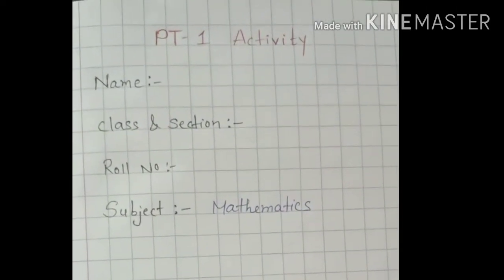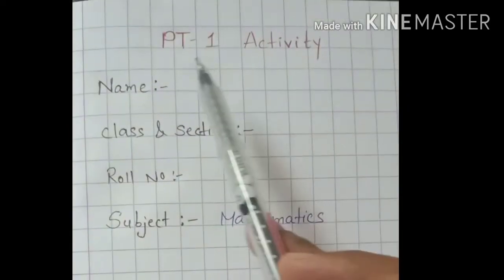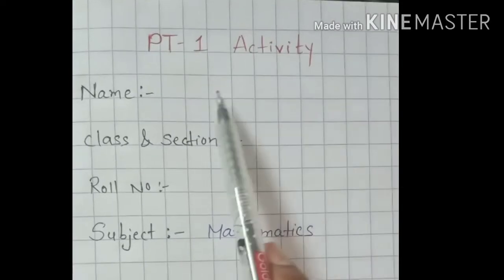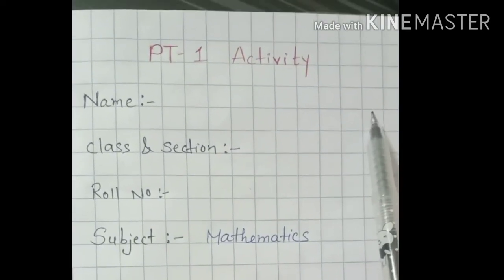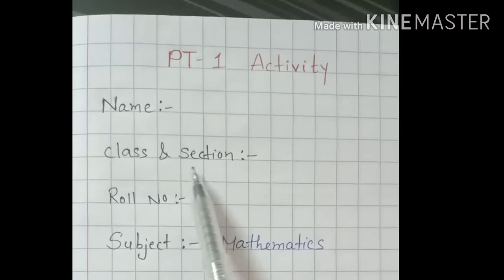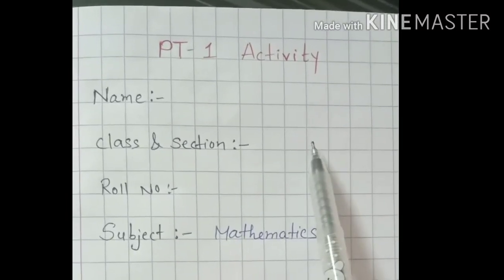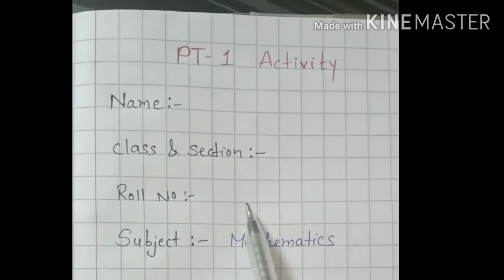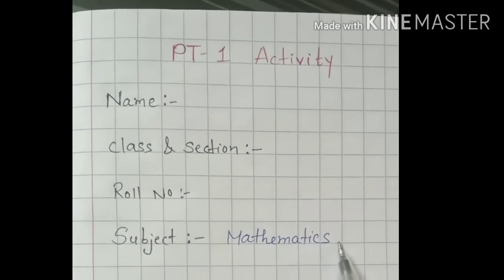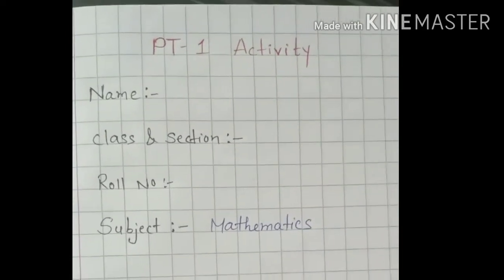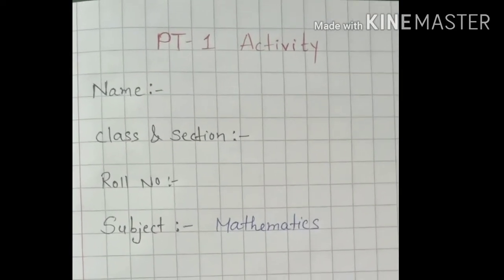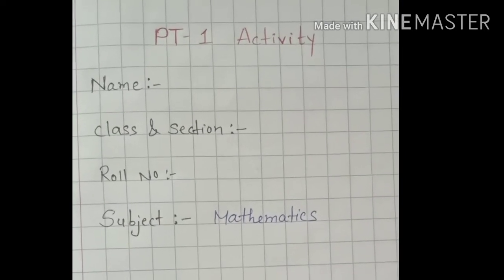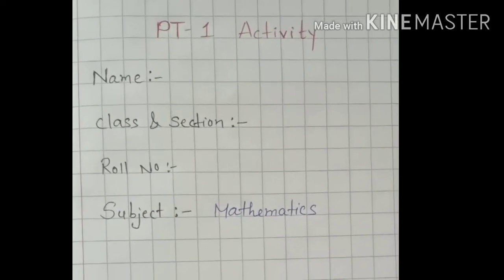On the first pin page, you will write PT1 Activity. Then you have to write your full name with your surname and father's name. Then write class and section — Class 2 and whichever division you are in: A, B, C, D, E, or F. Then write your roll number. Subject is Mathematics. You can also make this page more attractive using pencil color, crayons, or sketch pens.